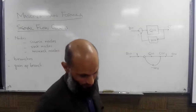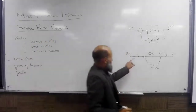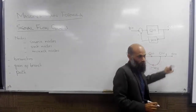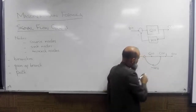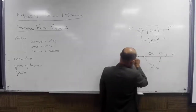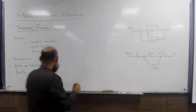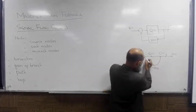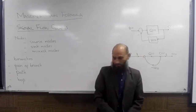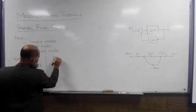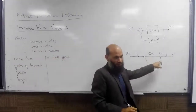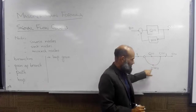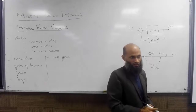Then we have a path: if we start from one point and can reach another point by moving in the direction of arrows, that is called a path. A closed path is a loop — for example, if we start from a node, follow a path, and come back to the same point, that is a loop. We also have the terminology of loop gain: the gain of the branches within a loop is called loop gain. For example, the loop gain for this loop is minus G(s) times H(s).